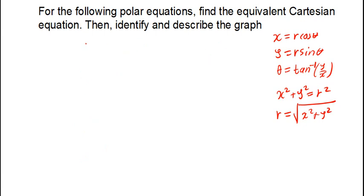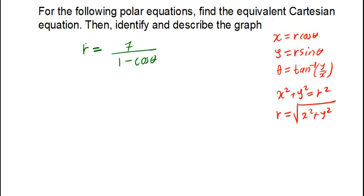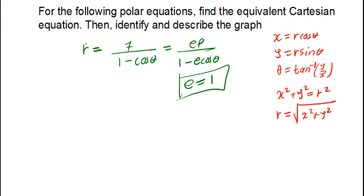Now let's look at another example: r = 7 / (1 − cosθ). Before converting, I want to identify the type of conic section we're dealing with. Comparing to the standard form r = eP / (1 − e cosθ), we see that e = 1, which means it's a parabola. So the equation I'm going to get at the end of the day is the equation of a parabola.